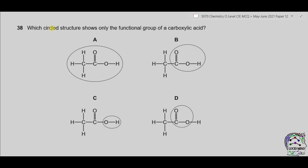Question 38. Which circled structure shows only the functional group of carboxylic acid? The functional group of carboxylic acid is –COOH. In the first structure, CH₃ is also included in the circle — incorrect. In the second circle, only –COOH is shown — correct. In the third, only –OH is circled, which represents an alcohol. In part D, the circled group represents an ester linkage. The correct answer is part B.